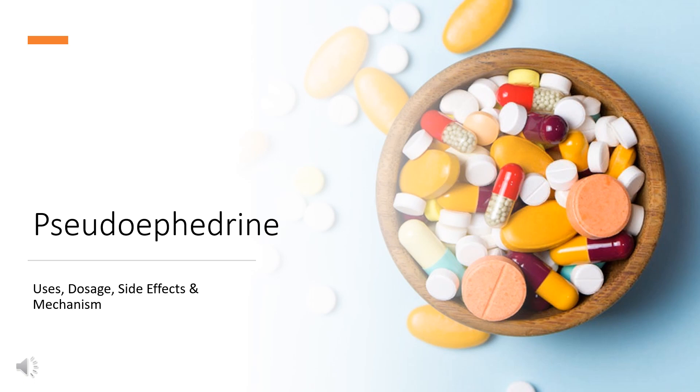Pseudoephedrine is an alpha and beta adrenergic agonist used to treat nasal and sinus congestion as well as allergic rhinitis.